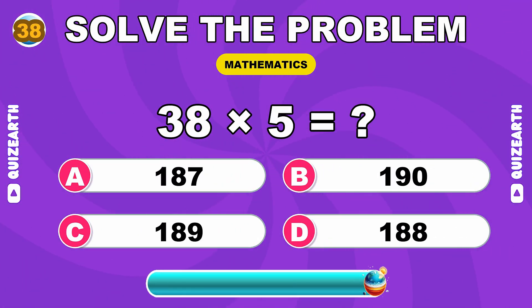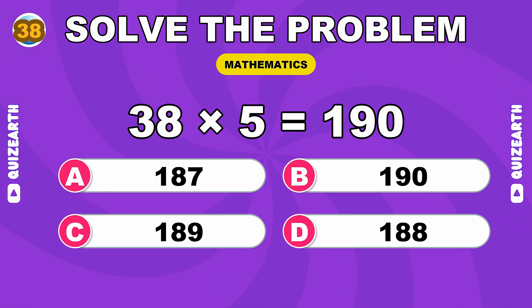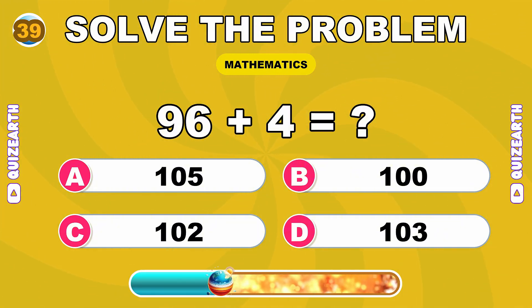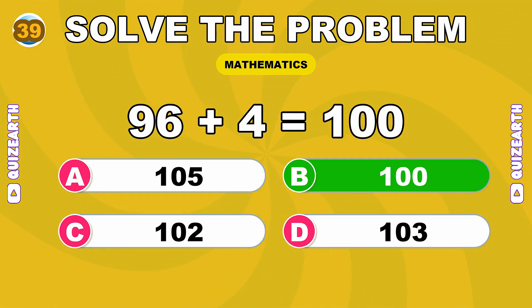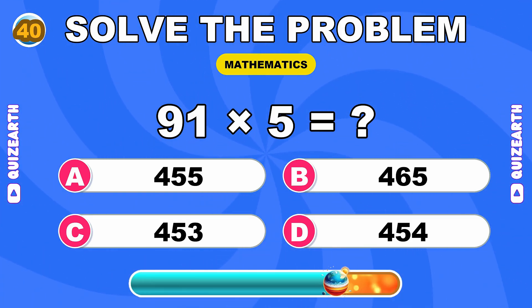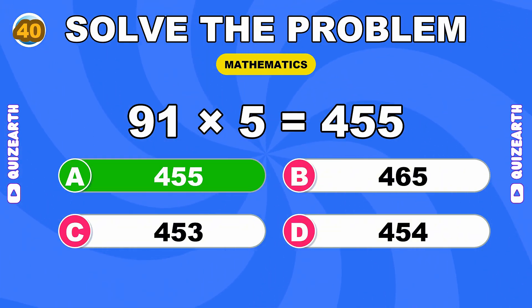How much is 38 times 5? Breathtaking, 190. What do you get when you add 96 and 4? What is 91 times 5? Too smooth, 455.